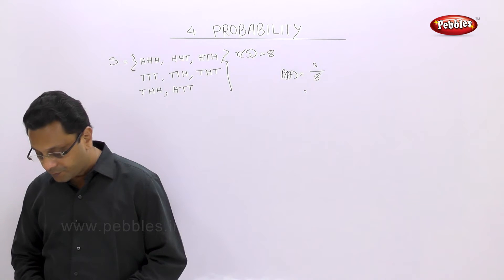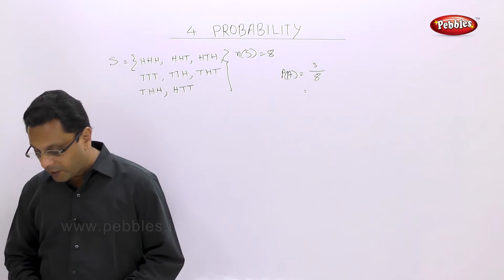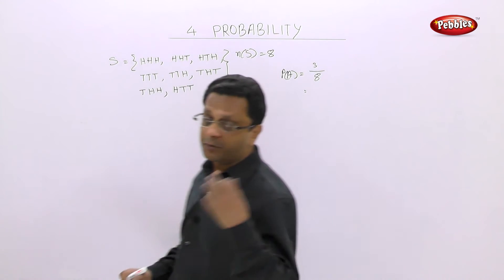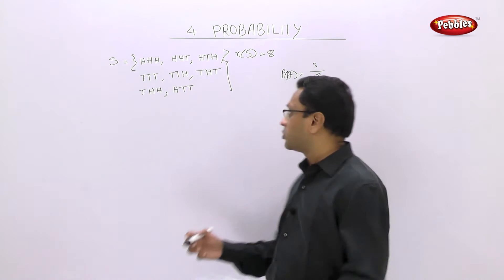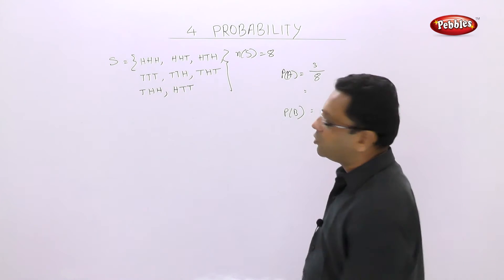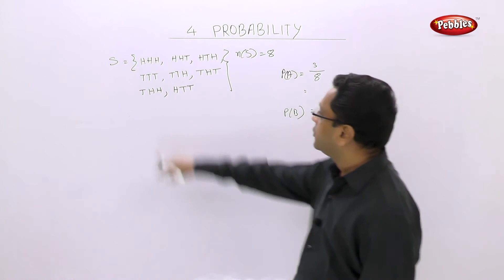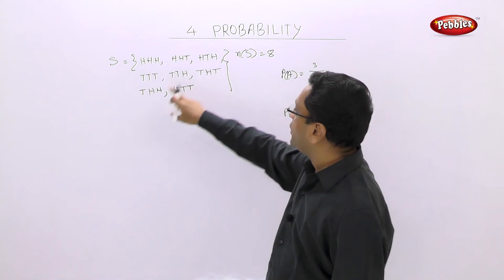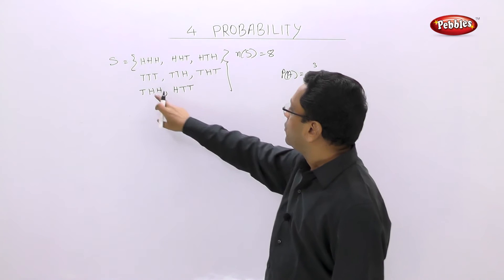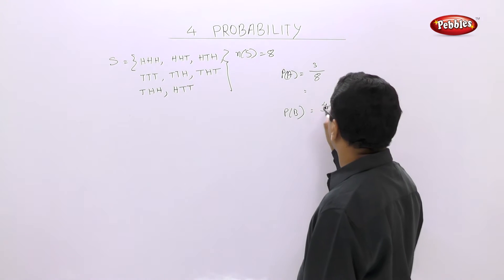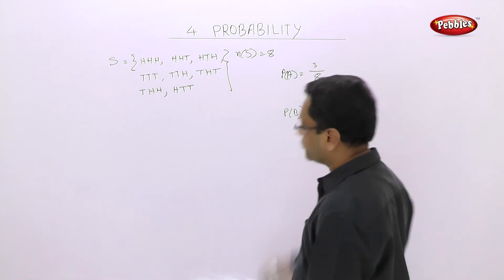Second event: getting at least 2 heads. That means 2 heads or 3 heads are also possible. Counting the outcomes — HHH, HHT, HTH, THH — that is 4 outcomes. So P(B) = 4/8 = 1/2.